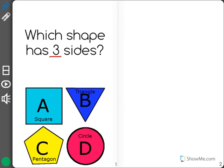If I look at the first shape, that's a square. I count one, two, three, four sides. It does not have three sides.